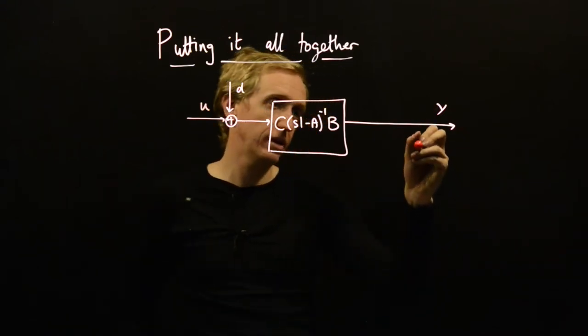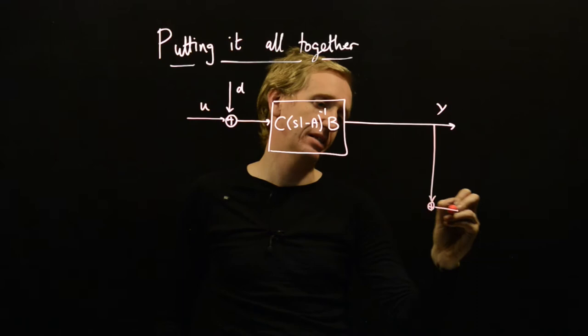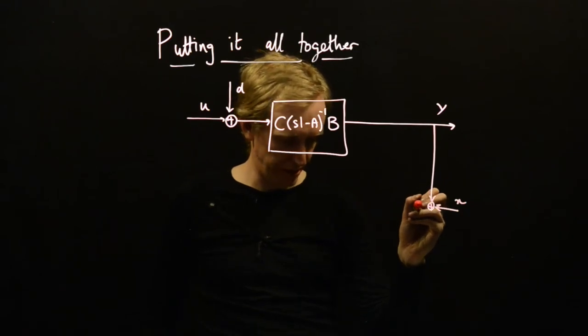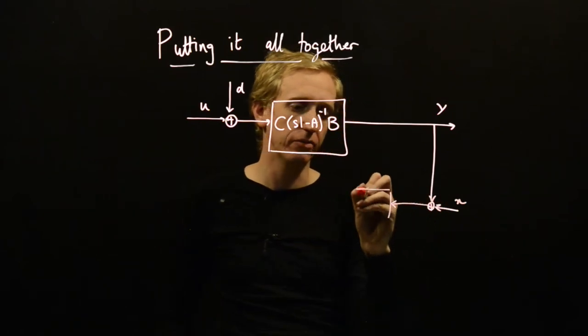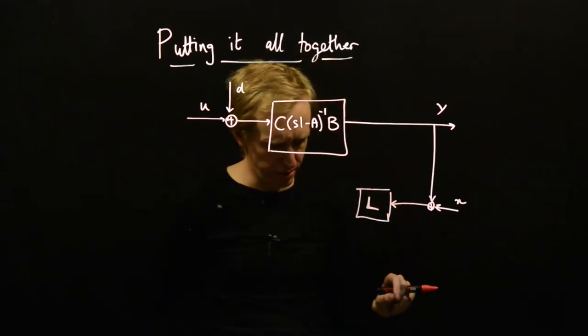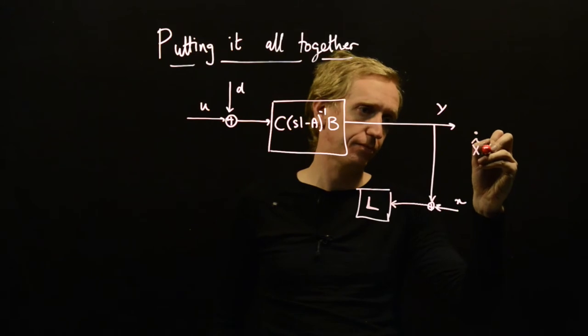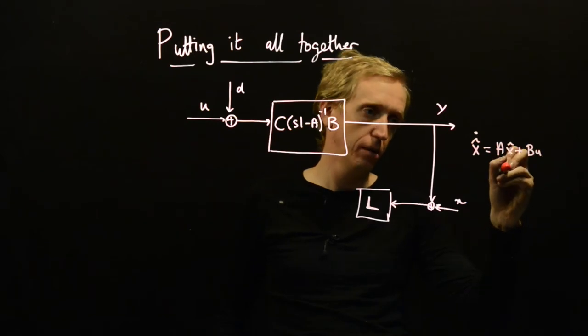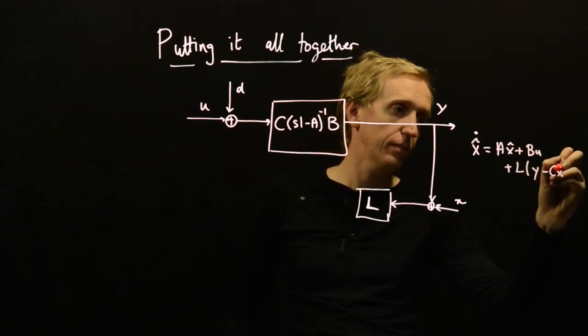So what happens? We can measure this. Let's draw this down here and let's put a plus and add some sensor noise in. So this is what we have access to. We're going to have our observer first. So our observer matrix L is going to go in here. If we remember, our observer equation was X hat dot equals AX hat plus BU plus L(Y - CX hat).